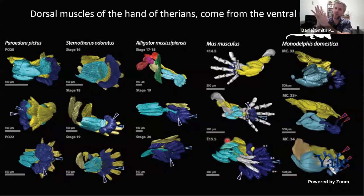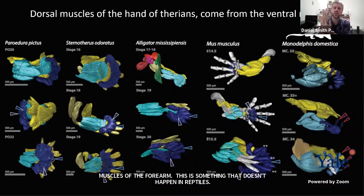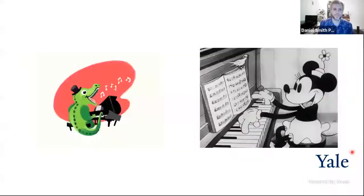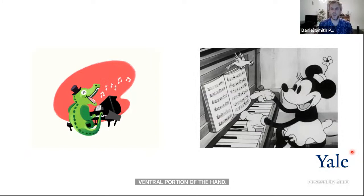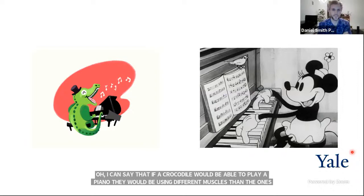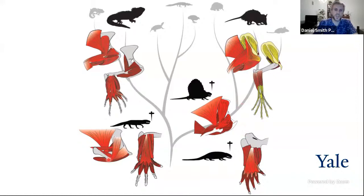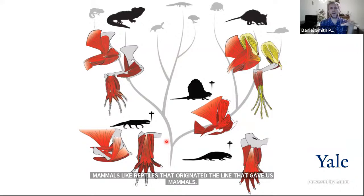Another main difference is that some muscles of the ventral part of the hand in mammals move away from the hand and end up being part of the forearm muscles — something that doesn't happen in reptiles. Additionally, some muscles that develop in the ventral hand in mammals squeeze in between the bones of the hand and end up appearing to be in the dorsal part, but actually originate from the most ventral portion. So if a crocodile could play piano, it would use very different muscles than we do. All these unique aspects of mammal muscle anatomy evolved only in mammals — early mammal-like reptiles had muscle anatomies more similar to early reptiles.